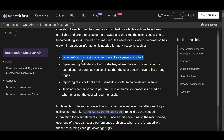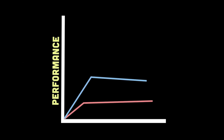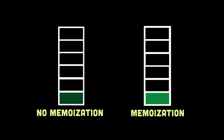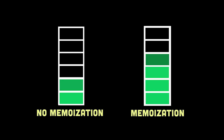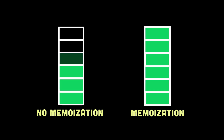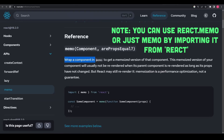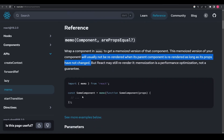Number three is memoization. Memoization in React is a technique used to optimize the performance of function components by caching the results of expensive computations or function calls. It is particularly useful when dealing with computationally intensive or frequently called functions that have the same input values, helping avoid redundant calculations. In React, there are three techniques for memoization: react.memo, the useMemo hook, and the useCallback hook. React.memo is a higher-order component used to wrap a purely functional component to prevent re-rendering if the props never change.